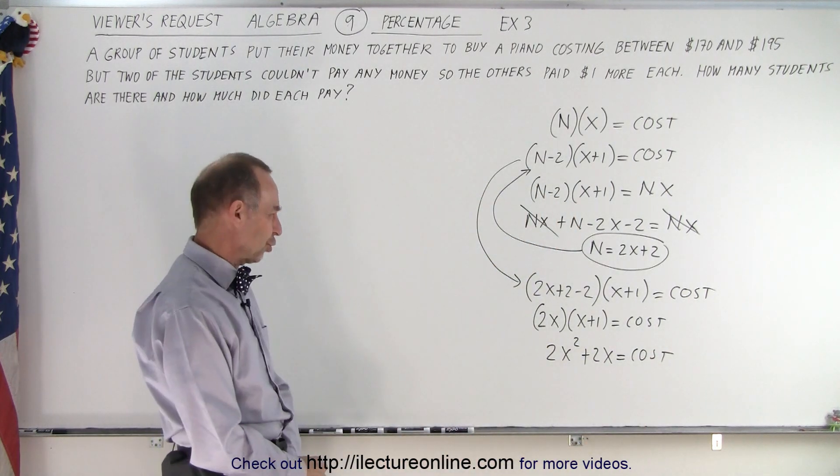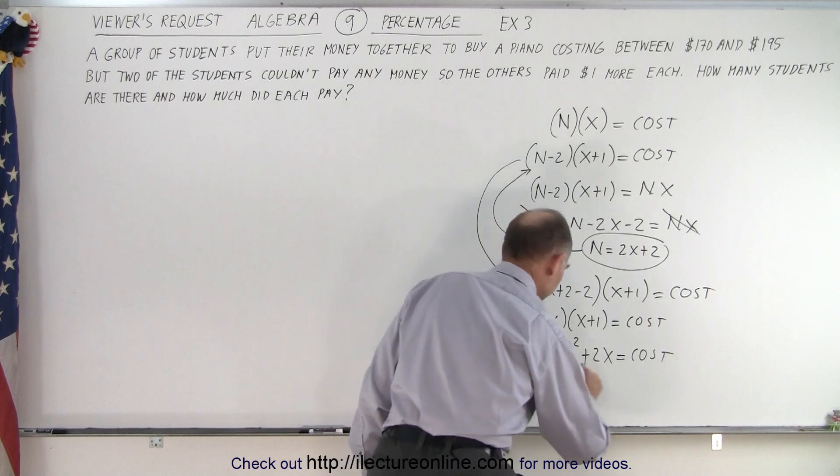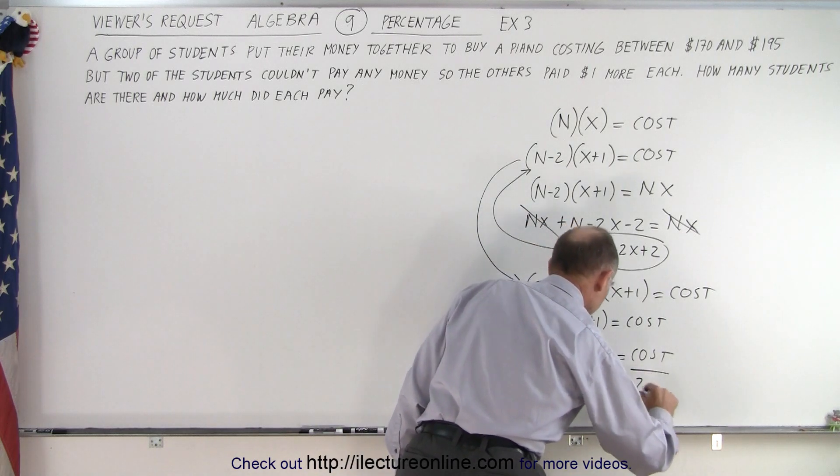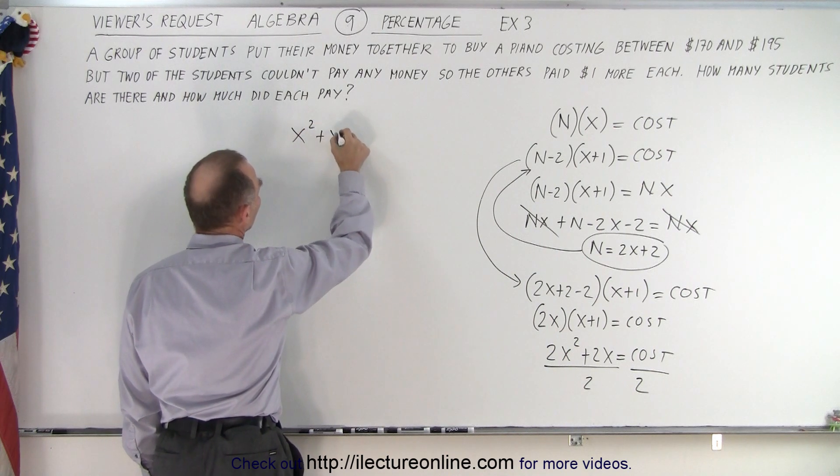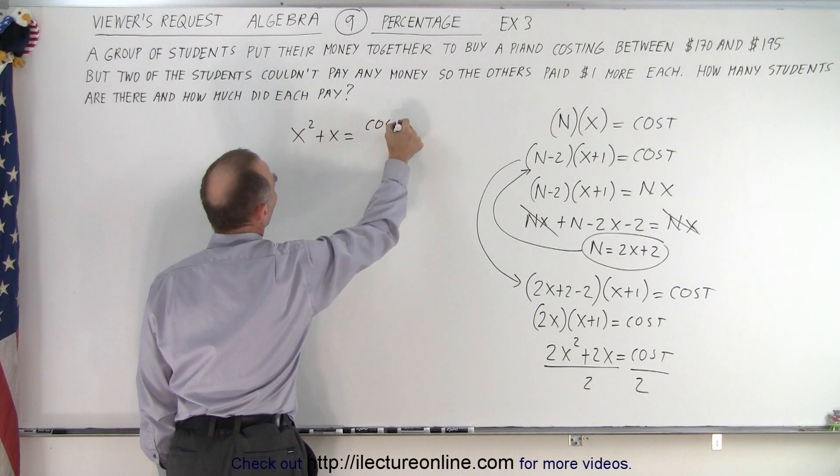Alright, let's get rid of those 2s. Let's divide both sides by 2. Which means that x² + x must equal half the cost of the piano.